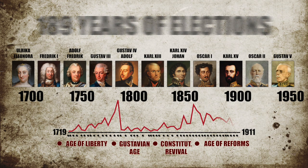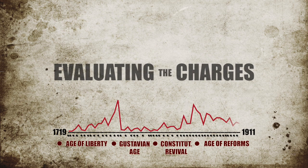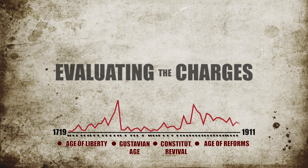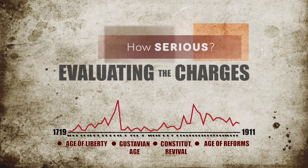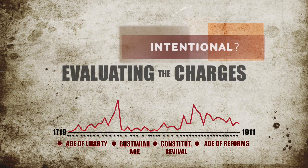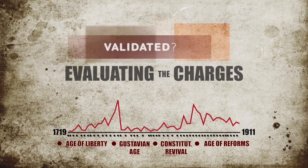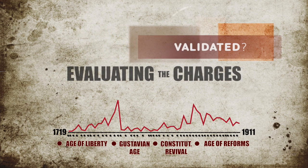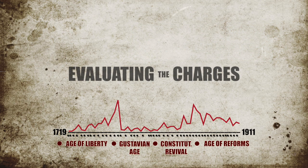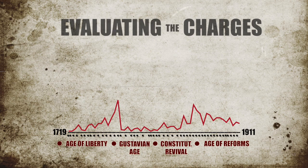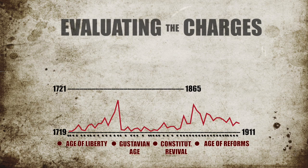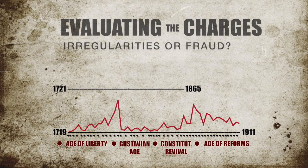The actual content of the complaints and the council law court's hearings and verdicts are obviously crucial. How serious were the charges? Did they indicate intentional corruption or simply mistakes? Were concerns validated? To get to the bottom of this, Theorell coded election petitions containing the most serious charges between 1721 and 1865, after which the Diet of Estates was abolished. He made a distinction between what appeared to be irregularities and actual fraud, where someone was, at least allegedly, actively trying to influence the election result.